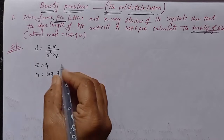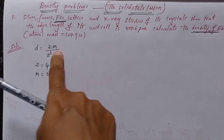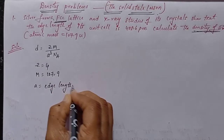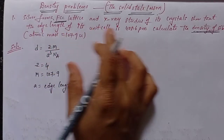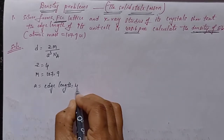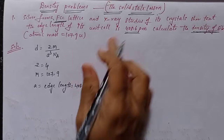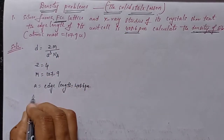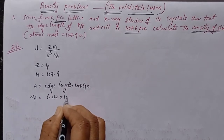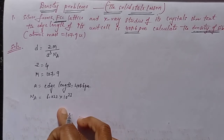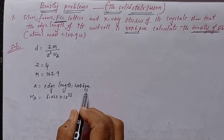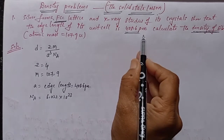The M value is 107.9. The edge length 'a' is equal to 408.6 picometers, as given in the question. The Avogadro number Nₐ is the fixed value 6.022 × 10²³. Before substituting into the formula, the edge length must be in centimeters, but it is given in picometers, so we need to convert picometers to centimeters.